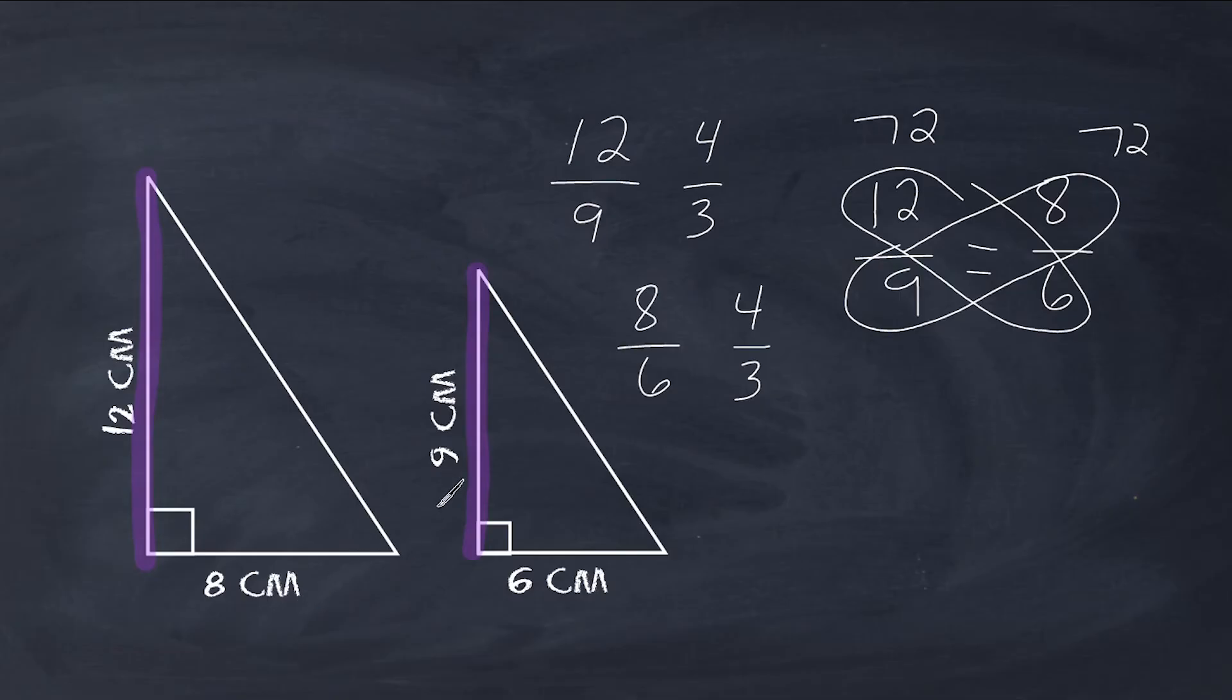And yet there is one more way we can determine similarity between these two triangles. We can take the base of this triangle, which is 8, and compare it to the height of the same triangle. And the ratio of a triangle's base as compared to its height should be identical to the base compared to the height of the other triangle. So 8 compared to 12 should be equivalent to 6 over 9.